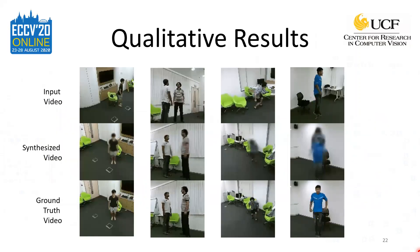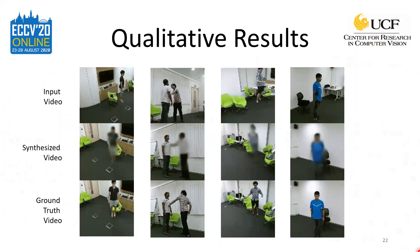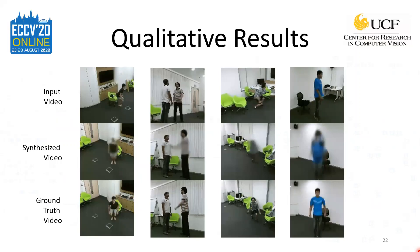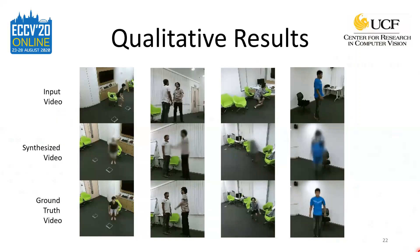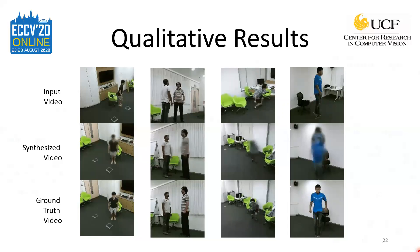Here you'll see four examples of results from our network on the NTU-RGBD dataset. The videos on top were used as the network input, the videos in the middle are those synthesized by the network, and the videos at the bottom are the ground truth videos from the novel view. You'll notice that the action is shown accurately in the synthesized videos, but there is motion blur present. Training is done at a resolution of only 112 x 112, because any larger resolution would require significantly more GPU memory and time. The small resolution makes it difficult to maintain fine-level action features, therefore making it difficult to avoid the presence of motion blur in the synthesized videos.